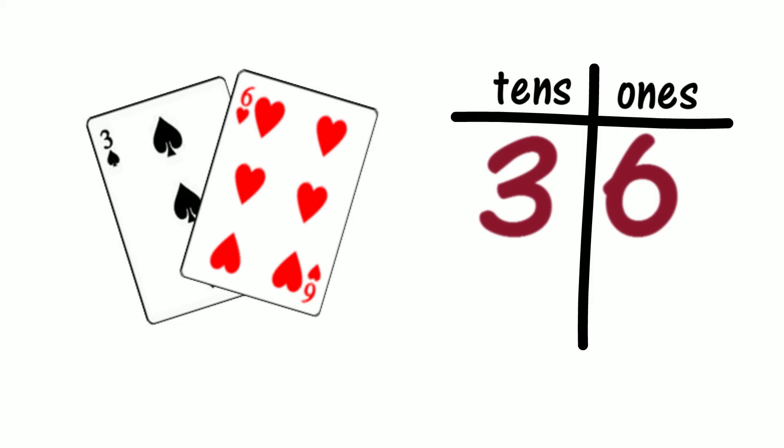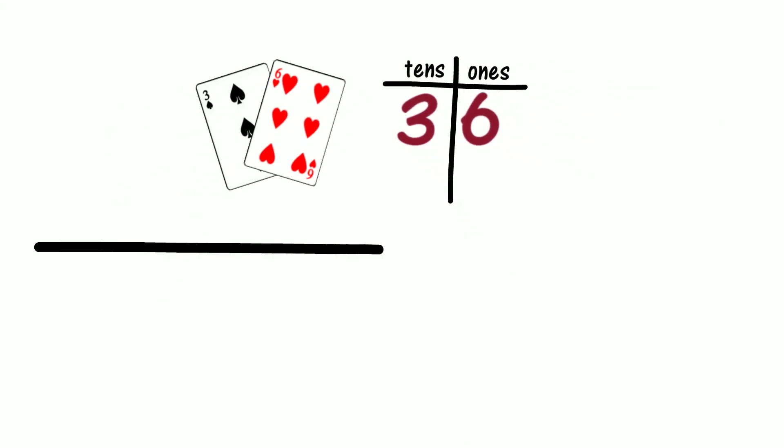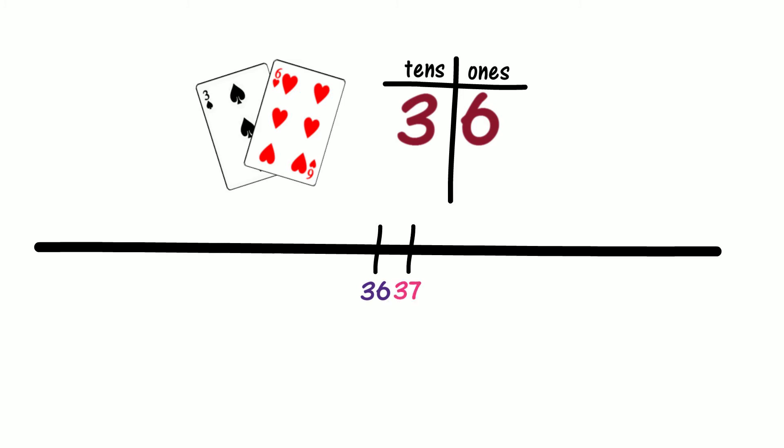Let's record an open empty number line. Where could 36 go on this number line? Because there are no numbers on our number line yet, could 36 go anywhere we want it to? If this is where 36 is on our number line, where would 37 be? Would 37 be on the right of 36? Why? Is it because 37 is higher than 36? Do numbers get higher as we move to the right?